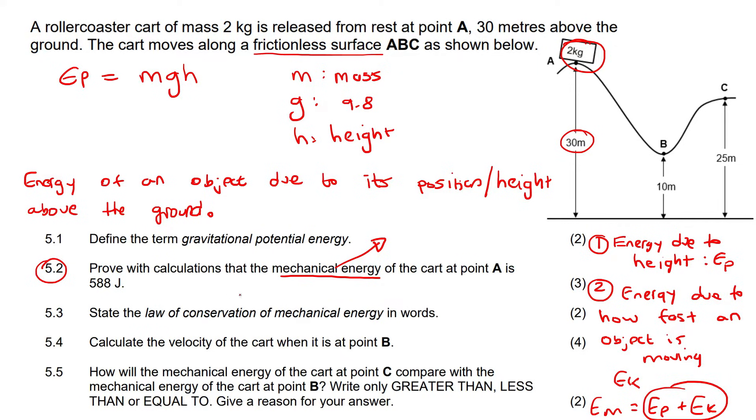So, it says, prove with calculations that the mechanical energy at point A is 588. So, is the object moving over there? Let's just see. The roller coaster is released from rest. Okay. So, not moving. So, that means, okay, so normally, you would have to say that the mechanical energy is kinetic plus potential.